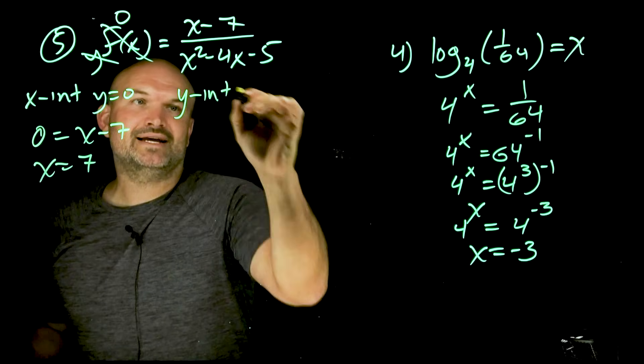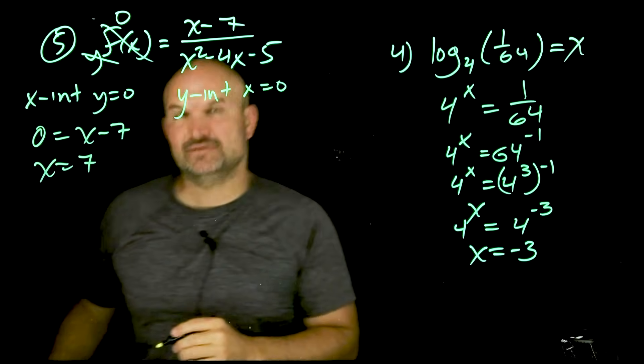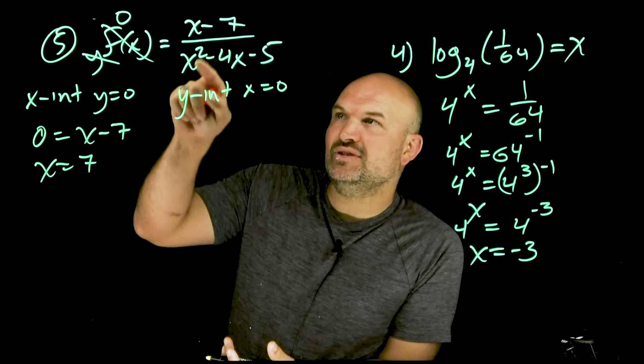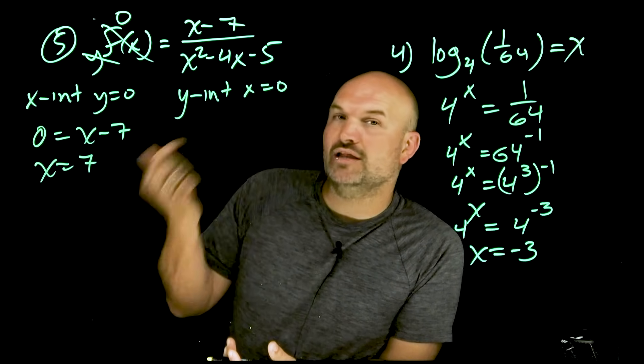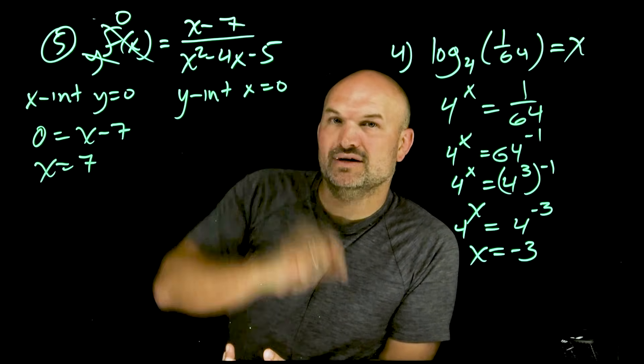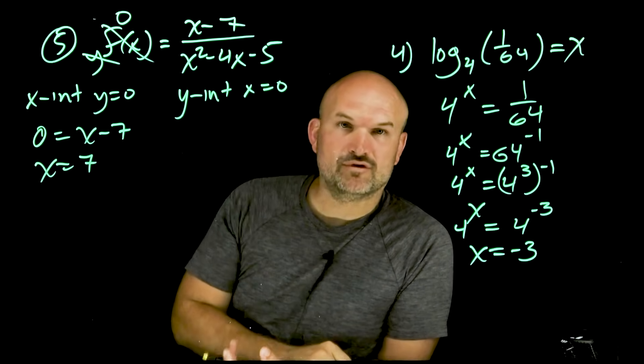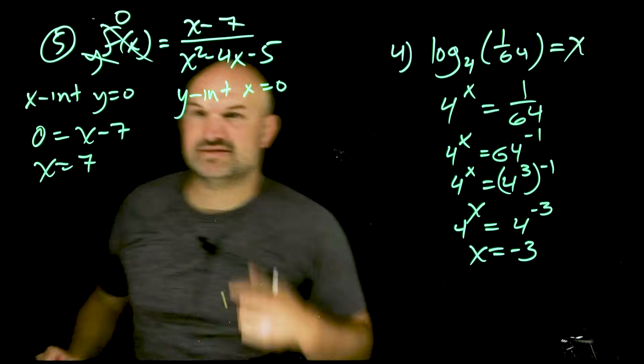The next one is going to be the y-intercept. Now that is when x is equal to zero. So just think about it. If I plug zero in for all these x's, all I'm going to be left with is constant over constant. So therefore, what am I going to have? A negative seven over a negative five. That is going to be seven fifths.